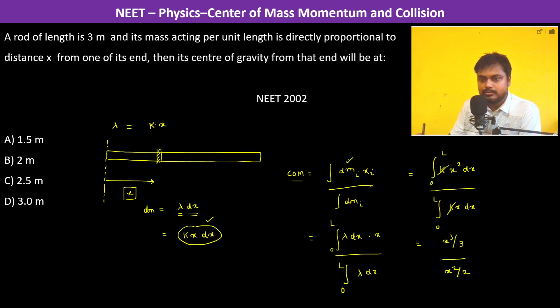So ultimately it is L cubed by 3 divided by L squared by 2, which equals 2/3 L. Now L is 3 meters, so therefore 2/3 times 3 cancels, so this equals 2 meters. Therefore B is the answer.